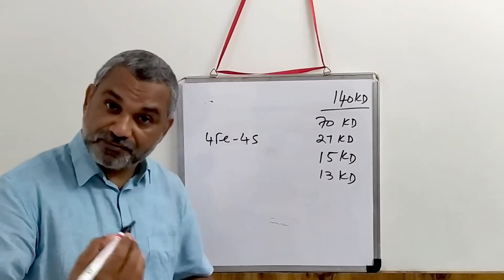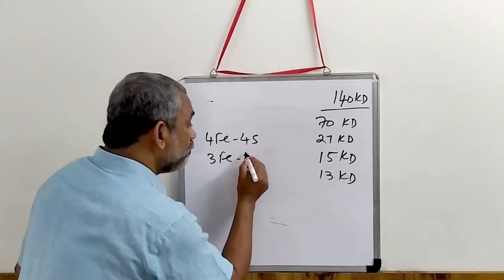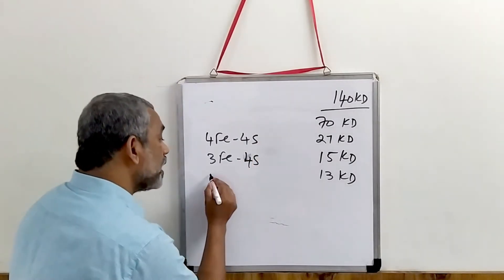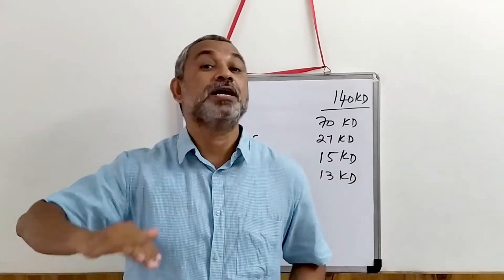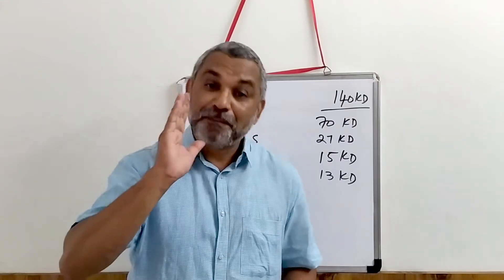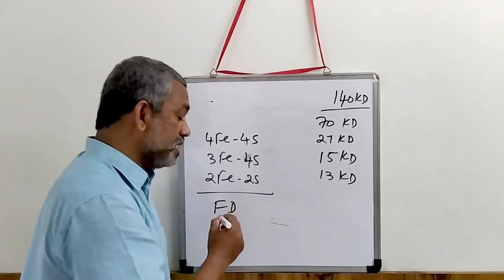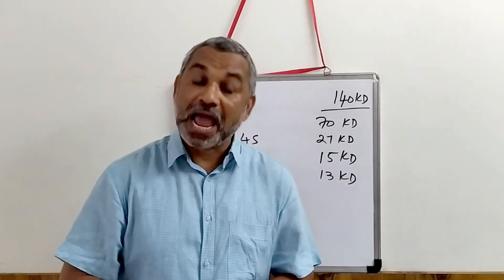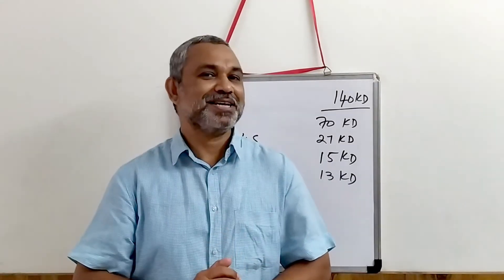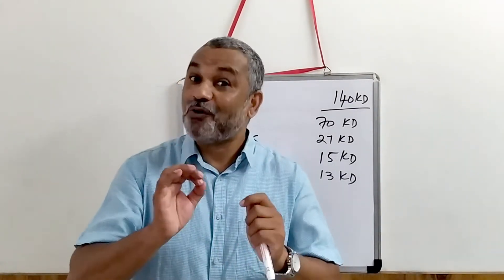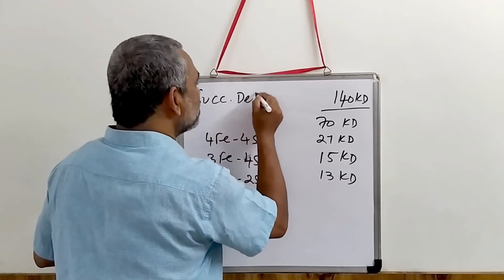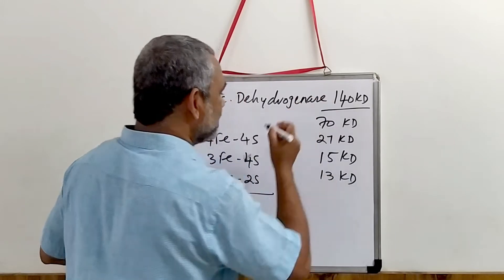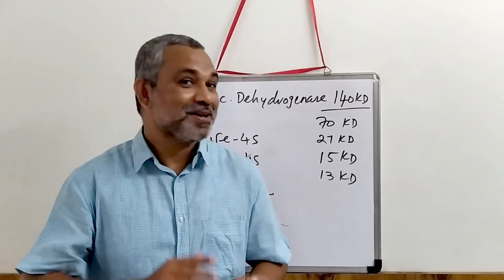This enzyme also has several iron-sulfur proteins: a 4Fe-4S iron-sulfur protein, a 3Fe-4S iron-sulfur protein, and 2Fe-2S iron-sulfur proteins — varieties of them — all required for transporting electrons. Apart from the iron-sulfur proteins, it also has an FAD in the active site of this enzyme.